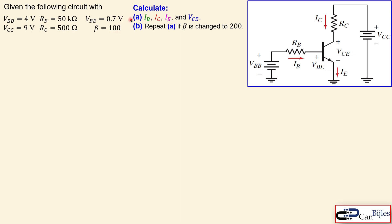In question A, I would like to calculate the base current, the collector current, the emitter current, and the collector-emitter voltage — four unknowns. We then repeat the process in question B for beta changed from 100 to 200. This is similar to example one where we changed RC; this time we change the beta to observe its effect on the same circuit.